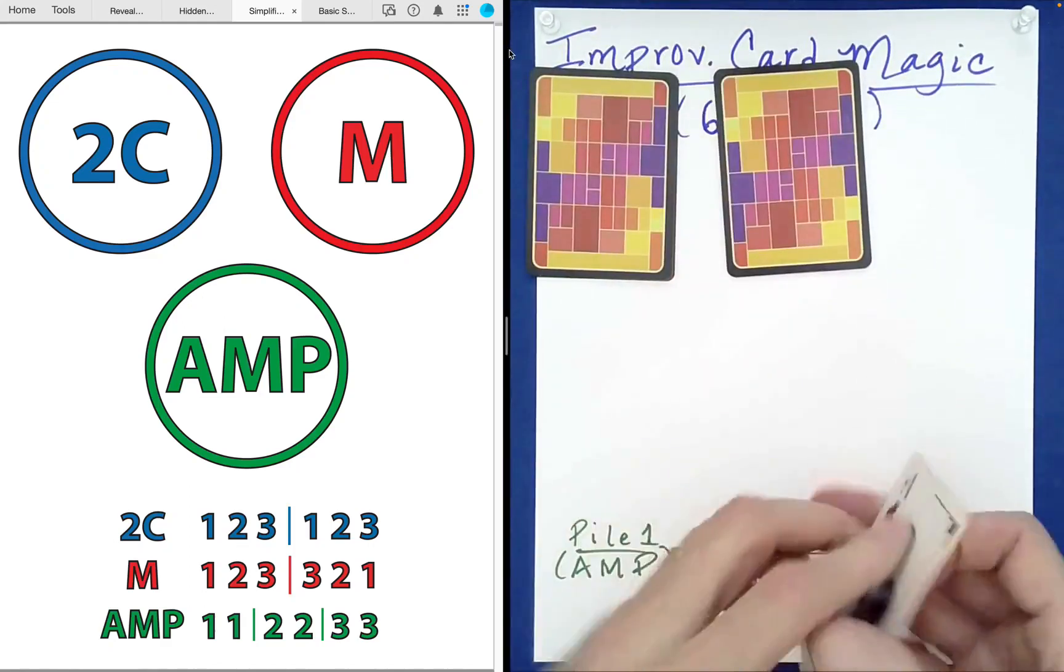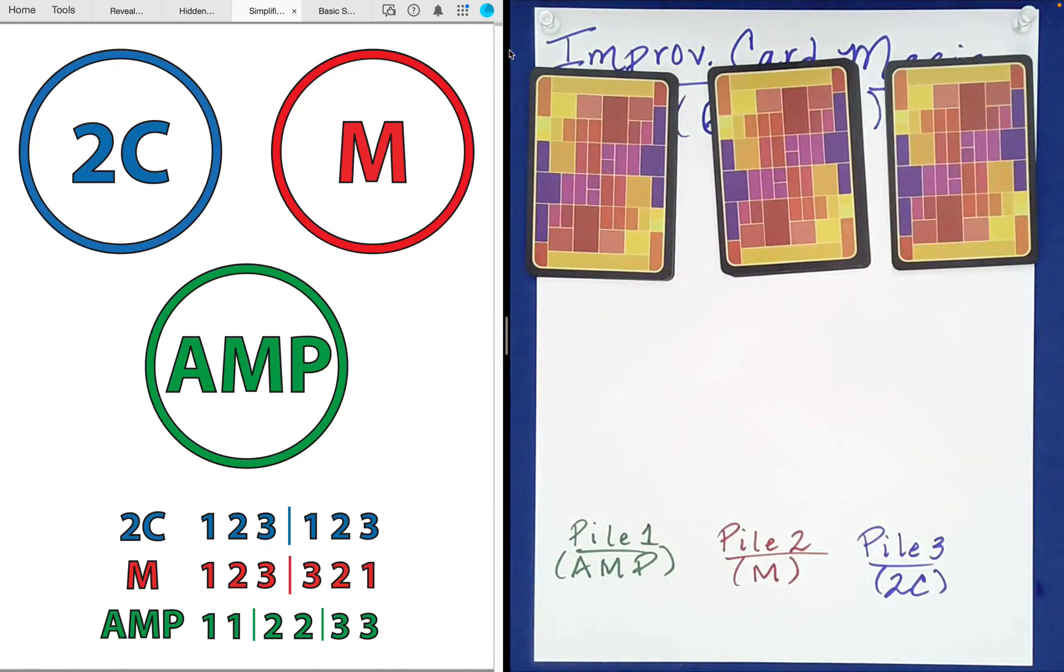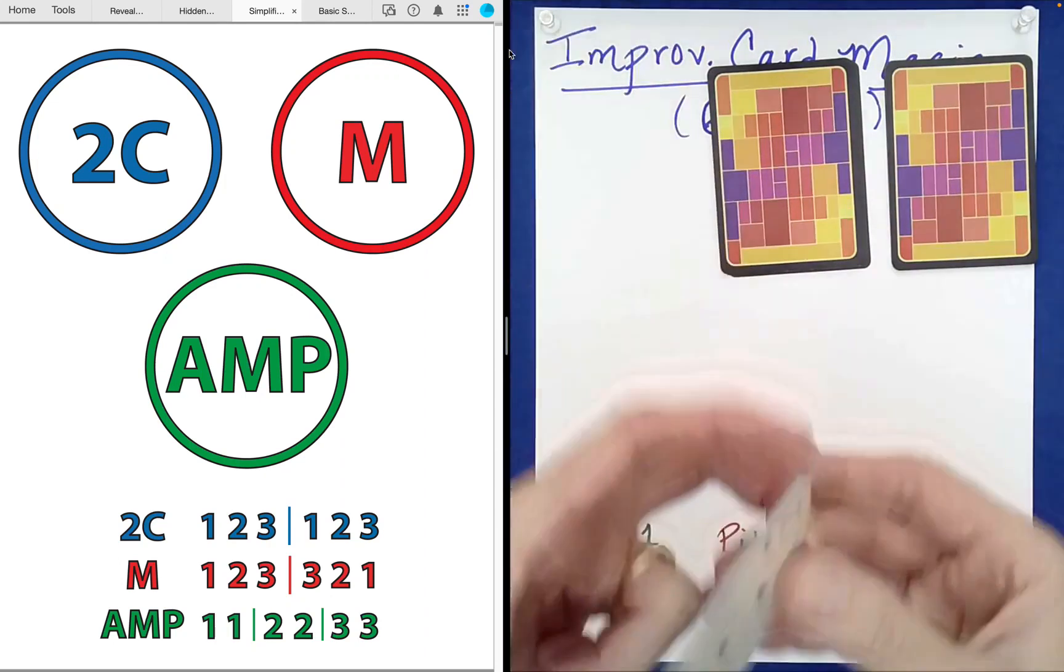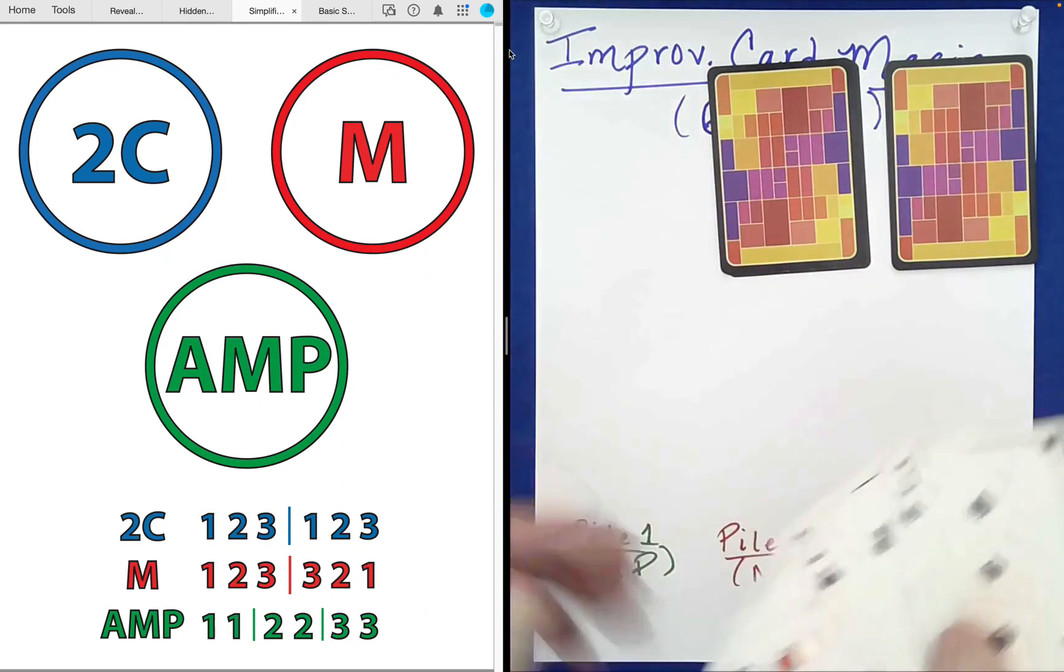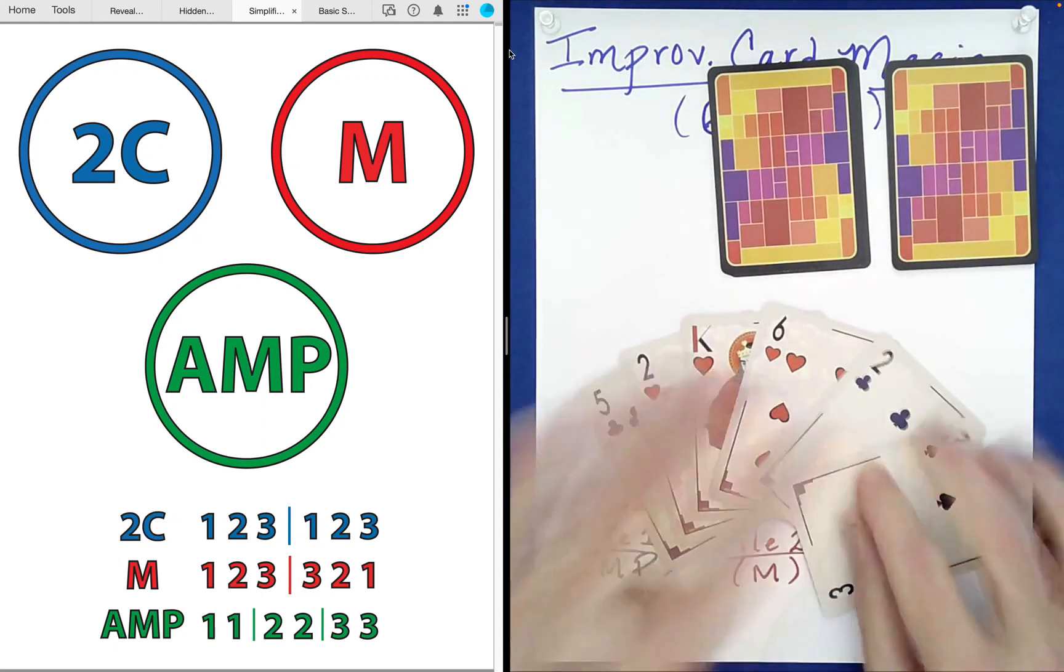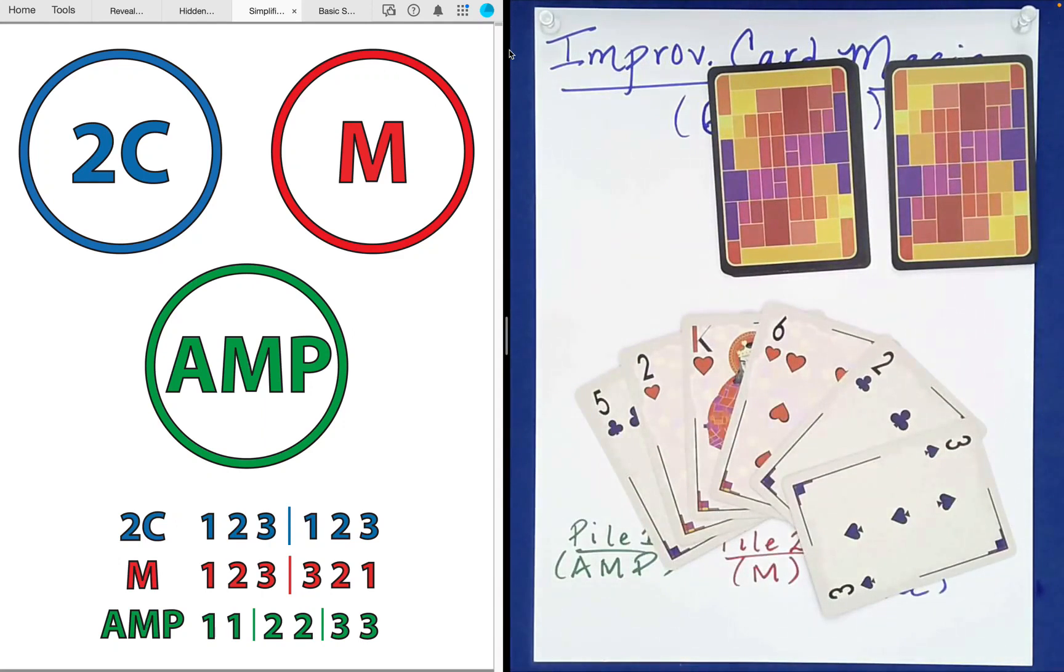And so what we're going to do is do a little bit of practicing looking for either interesting two cycle structures, mirrored structures or AMP structures. Okay so let's go ahead and look at the first one. Okay here we go. I want to remind you of something that I mentioned in the first video. The idea of randomness is probably not well understood by most people. Randomness is actually what they call clumpy.